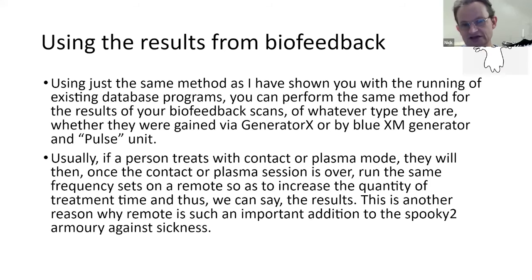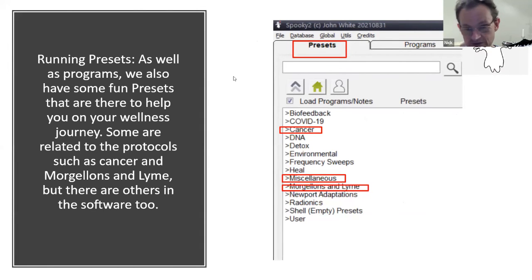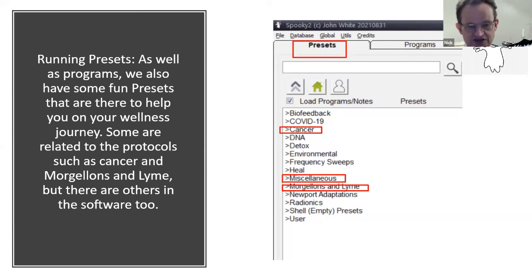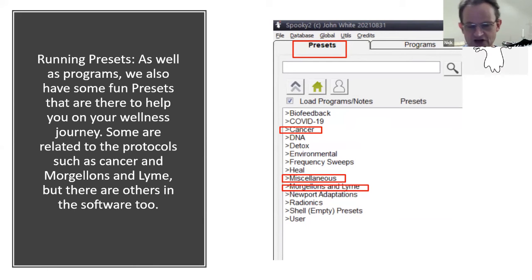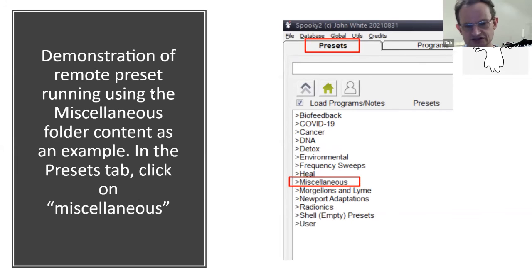Now a quick look at Presets — existing frequency sets which have already been set up so they're easy and quick to run. Some are related to main protocols within the software such as cancer, Morgellons, and Lyme, but there are plenty of others too. Have a look in the Miscellaneous folder when you're using the free Spooky2 software at home — it has lots of useful sets for remote, contact, and plasma. I'm going to demonstrate running a preset from the Miscellaneous folder as an example.